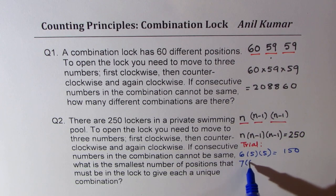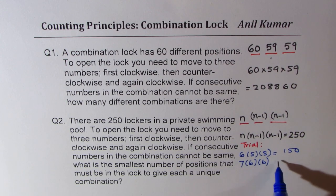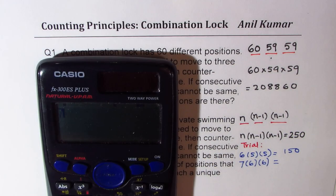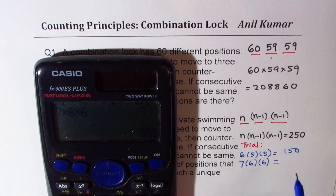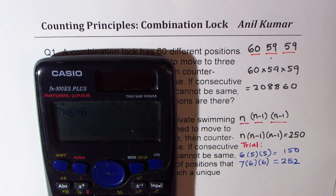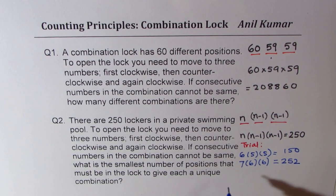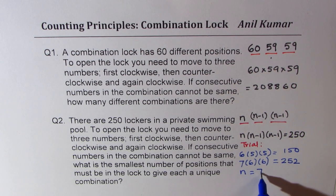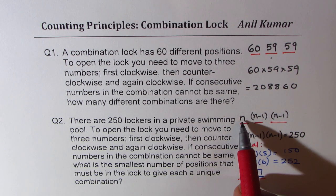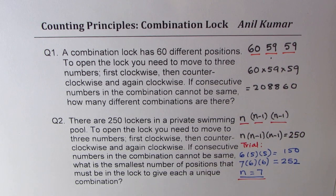Let me choose 7: 7 times 6 times 6. Let's calculate — 7 times 6 times 6 is 252. So that means n should be equal to 7. So n equals 7 positions for each lock will give us the required result.